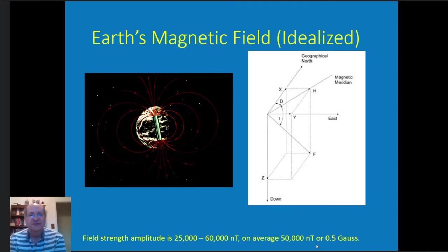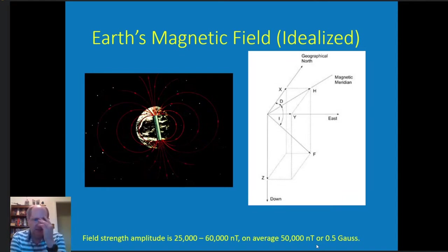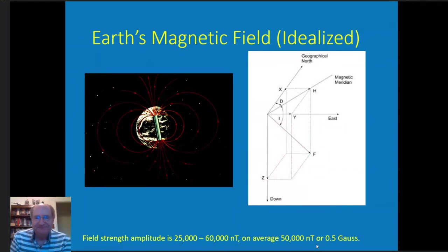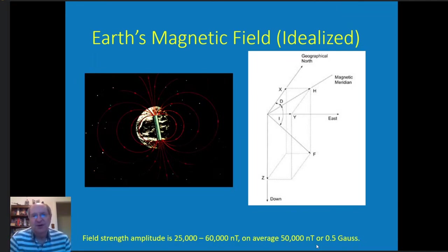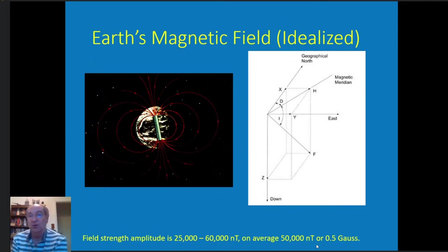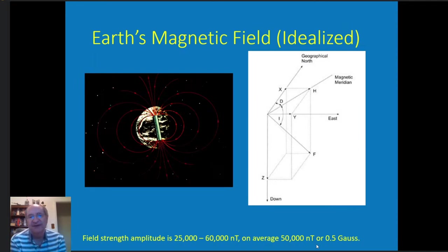An idealized version of the magnetic field is seen on the left, where the magnetic field of the Earth is basically represented by a bar magnet — essentially a dipole field — where somehow the north end is in the south pole and the south end is in the north pole. Blame that on Benjamin Franklin. The magnetic field is a vector component. On the right-hand side you can see how everything is oriented: we have the H field, or horizontal component, which points to magnetic north — not geographical north — and that angle between those two is the declination value. The inclination value is the angle from horizontal.